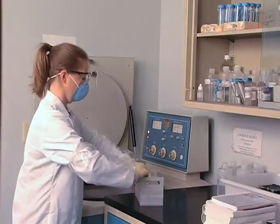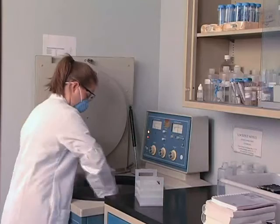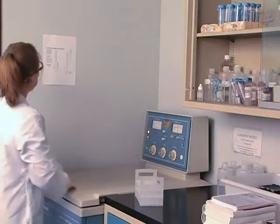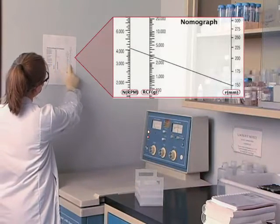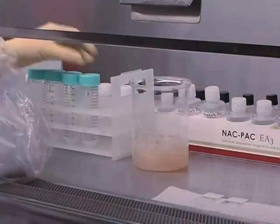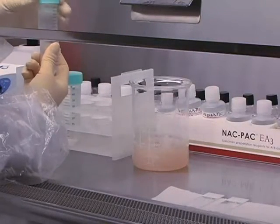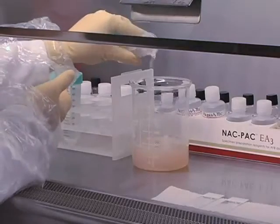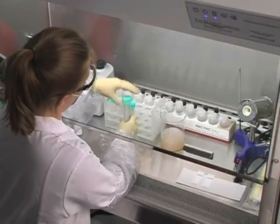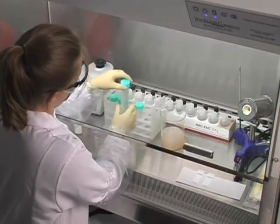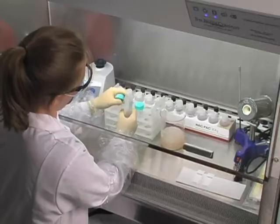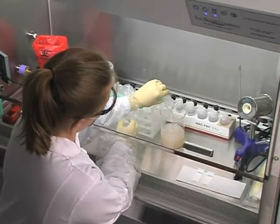Centrifuge the specimen tubes at 3000 XG for at least 15 minutes. Note that 3000 XG is not typically equivalent to 3000 RPM. You should use a nomograph or refer to the centrifuge owner's manual to determine what RPM is required to reach 3000 XG. After centrifugation, return the samples to the biosafety hood. Carefully decant all of the supernatant into a splash-proof container holding a proper disinfectant. Be sure to decant dry, as residual supernatant can negatively affect the sample pH. Wipe the lip of the tube with an appropriate disinfectant to prevent contamination. When decanting, be careful not to loosen the pellet.